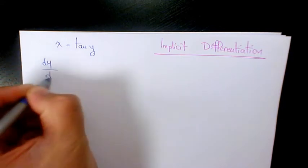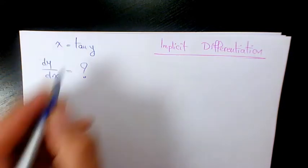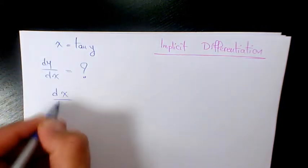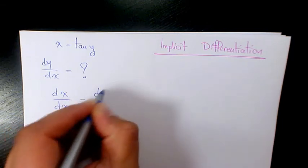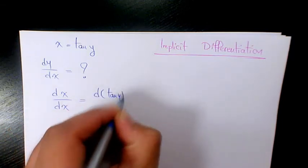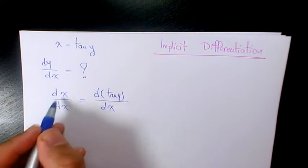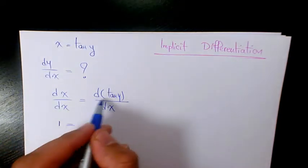So what are we going to do? dy over dx, we need to find it. We need to have dx over dx equals d of tan u over dx. The derivative of x with respect to x is going to be 1.